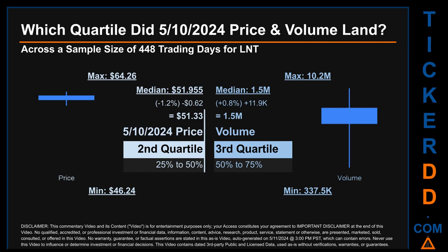The day's volume landed within the third quartile, that is within the 50 to 75 percent range of all sampled daily volume, which saw a max daily volume of 10.2 million and a minimum of 337,500. Quartiles tell us about the spread of a data set by breaking it into quarters. LNT has a median price of $51.955; therefore, the May 10th price was lower from that middle marker by 1.2%. The day's volume of 1.5 million was more than the median by 0.8%.